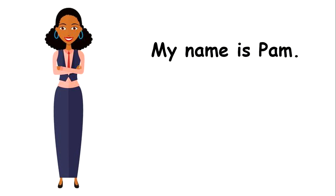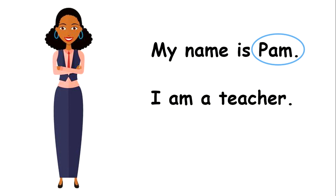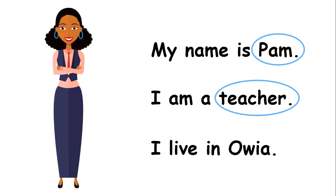So let's look at this lady and identify the nouns in these sentences. It says: 'My name is Pam.' The naming word here is Pam — so 'Pam' is a noun. Your name is a noun. 'I am a teacher.' She is a teacher — so 'teacher' is a noun. 'I live in Oya.' That's the name of a place — so 'Oya' is a noun. Great job helping me identify those nouns.